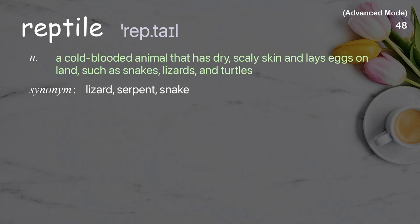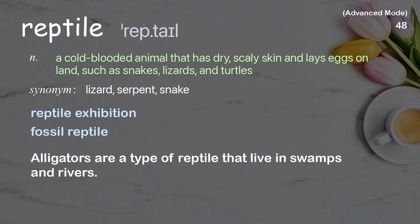Reptile: A cold-blooded animal that has dry, scaly skin and lays eggs on land, such as snakes, lizards, and turtles. Examples: Reptile exhibition, Fossil reptile. Alligators are a type of reptile that live in swamps and rivers.